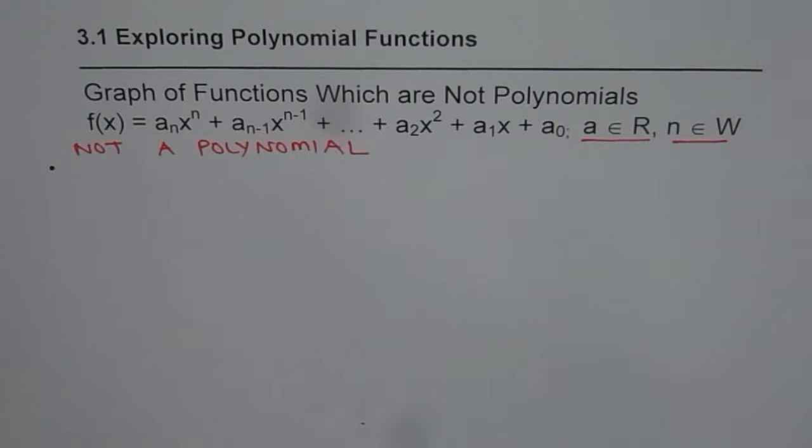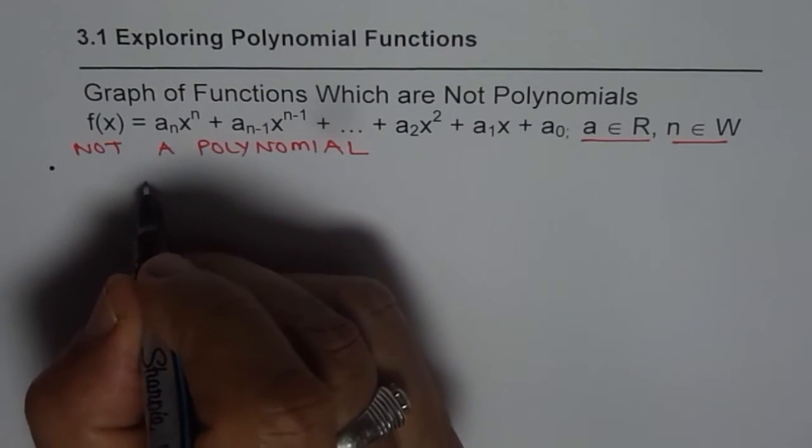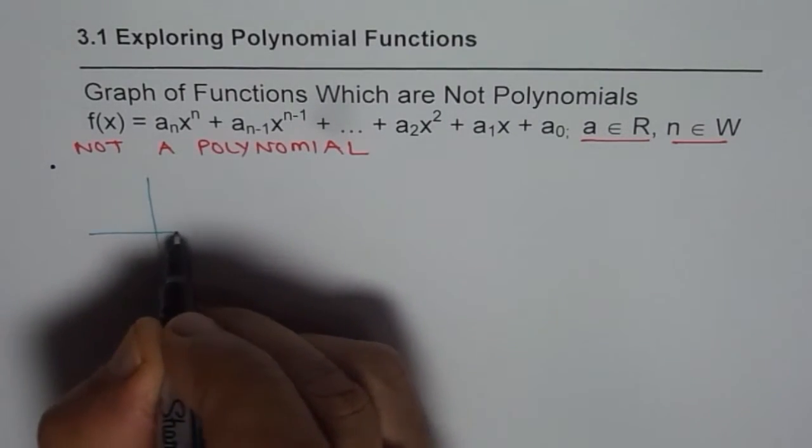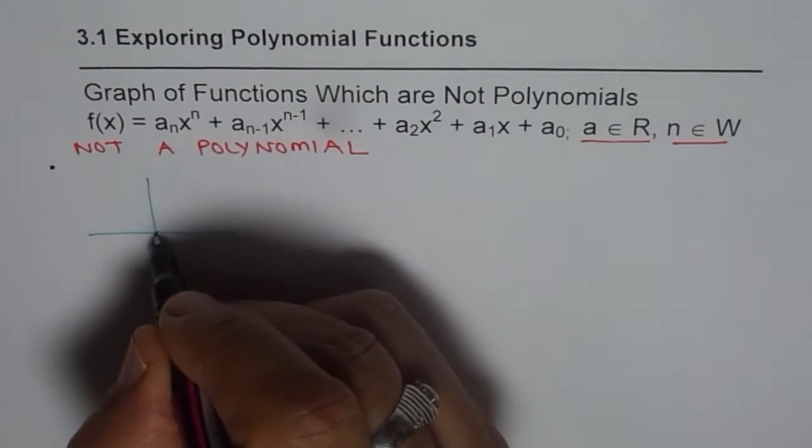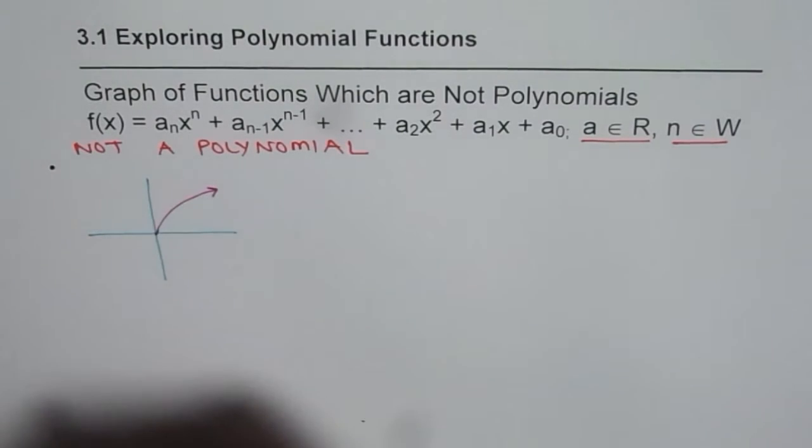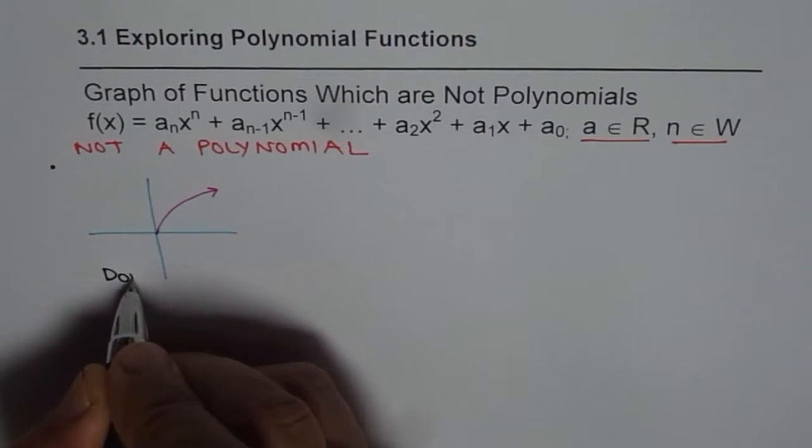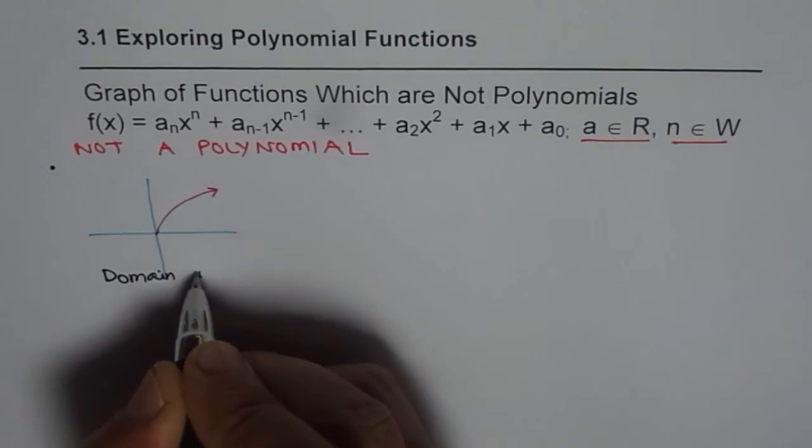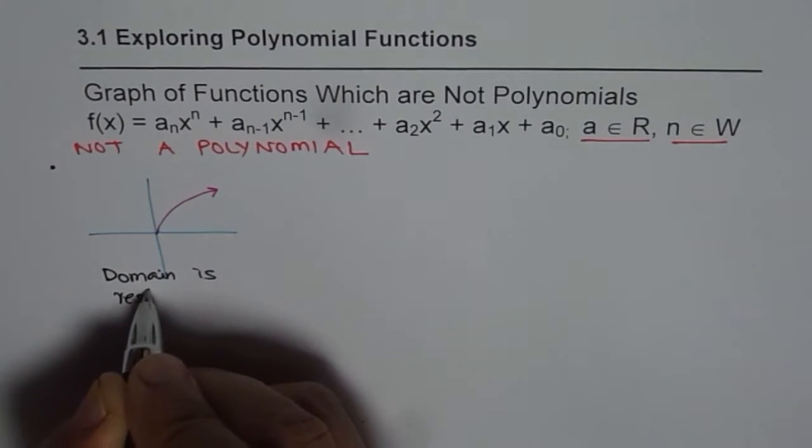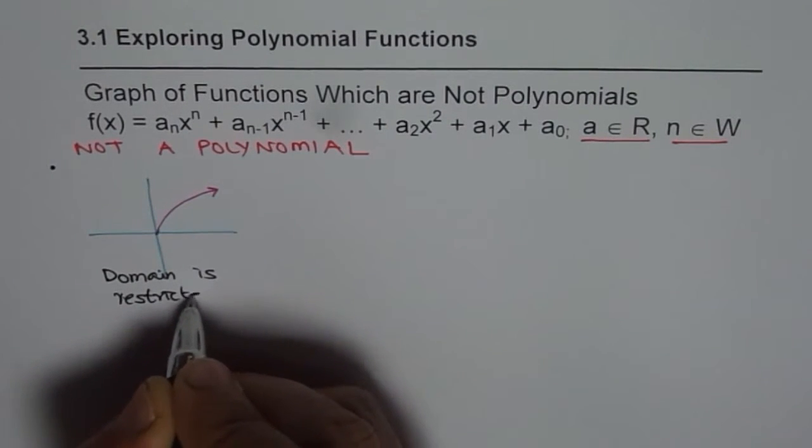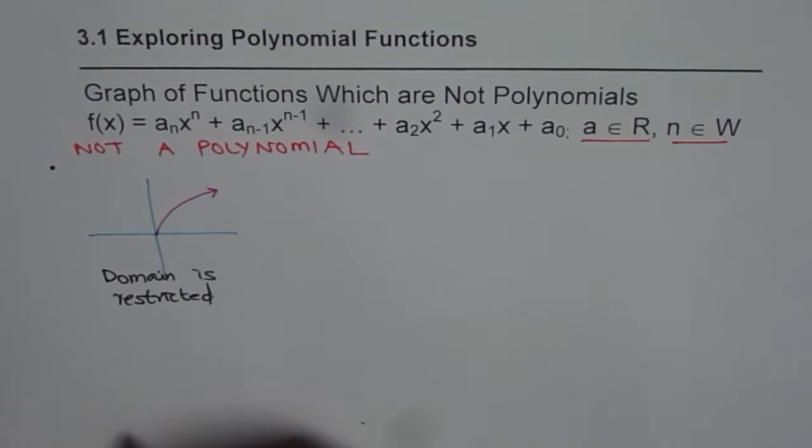Now I will show you some graphs which will not be of a polynomial. For example, square root function. Square root function is like this. It has a restricted domain. So it is not a polynomial since domain is restricted. Polynomial functions have no restrictions on the domain.